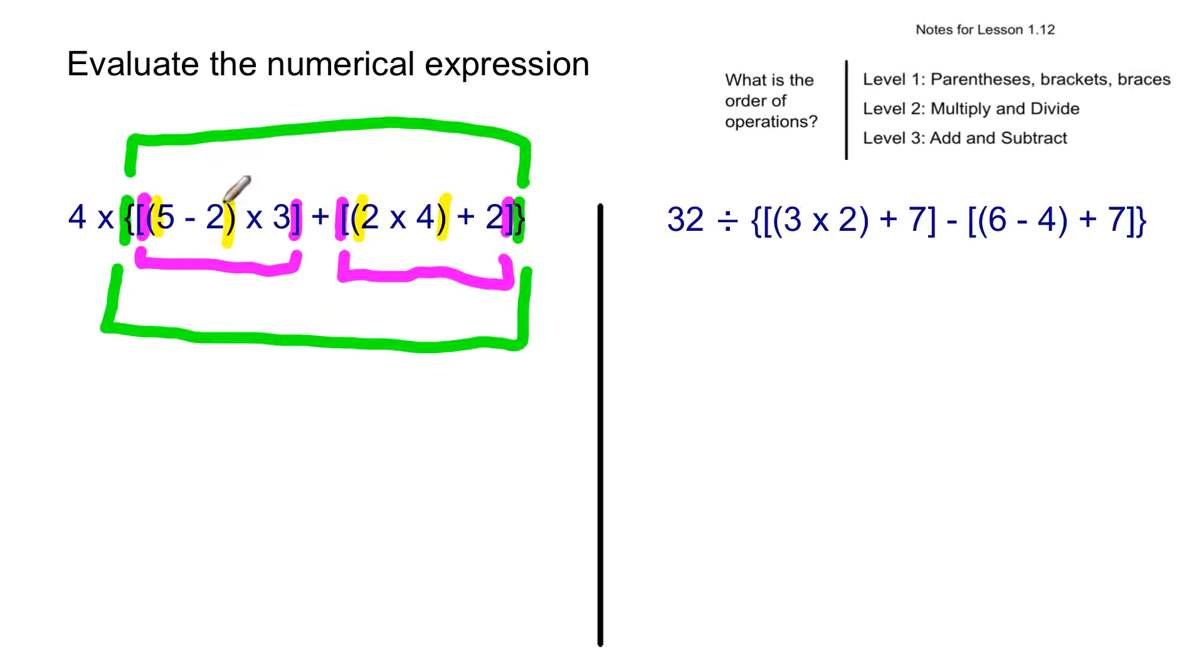So 5 minus 2. Hopefully, you're thinking that's 3. And then I multiply that times 3, which equals 9. And so that pink group evaluated out equals 9. And we're going to add that, because there's an addition symbol here, to whatever the value is of this pink group. So I have 2 times 4 in parentheses. I do that first. 2 times 4 is 8. Plus 2 is 10.